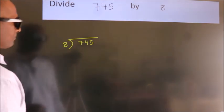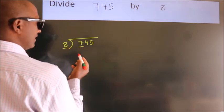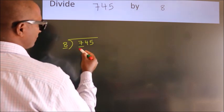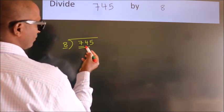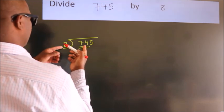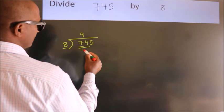Next, here we have 7, here 8. 7 is smaller than 8, so we should take 2 numbers, 74. A number close to 74 in 8 table is 8 nines, 72.